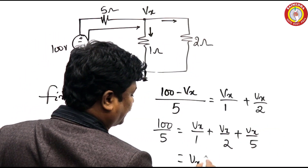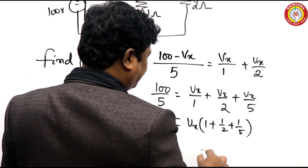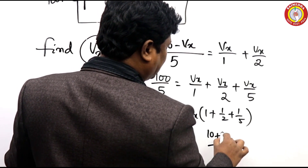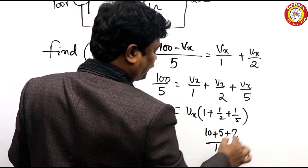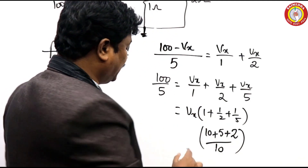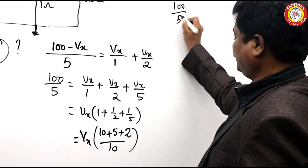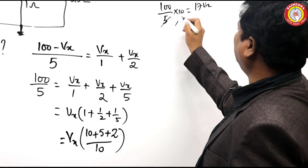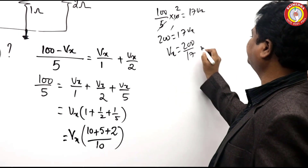If you take Vx/2 plus Vx/5 and take LCM as 10, this becomes: 10Vx/10 plus Vx/5 plus Vx/2. What is that? You can have 2, and this is 2/10, 1/2, 5/2, 1/2, multiplied by 10 into Vx. Now 100/5 into 10 equals 17·Vx. So 200 equals 17·Vx, and Vx equals 200/17 volts.